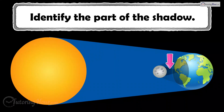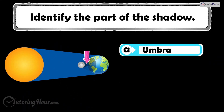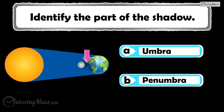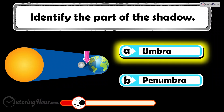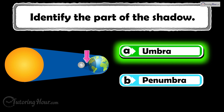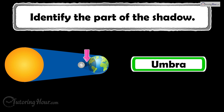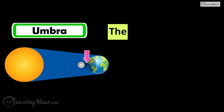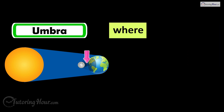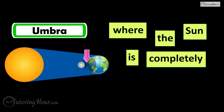Identify the part of the shadow. Is it A, umbra, or B, penumbra? The correct answer is umbra, the darkest central part of the shadow where the sun is completely blocked.